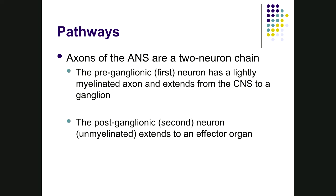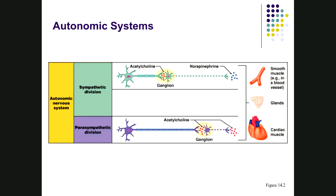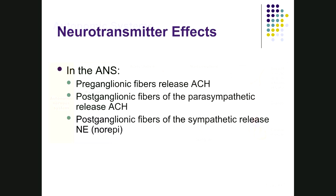To summarize: pre-ganglionic fibers extend to a ganglion and are lightly myelinated; post-ganglionic fibers extend to an effector organ and are unmyelinated. All pre-ganglionic fibers release acetylcholine, regardless of whether they are sympathetic or parasympathetic. The difference comes at the post-ganglionic level: parasympathetic post-ganglionic fibers release acetylcholine, while sympathetic post-ganglionic fibers release norepinephrine.